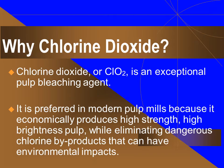Why is chlorine dioxide used? Because chlorine dioxide, or CLO2, is an exceptional pulp bleaching agent. It's preferred in modern pulp mills because it economically produces high-strength, high-brightness pulp while eliminating the dangerous chlorine byproducts that can have environmental impacts.